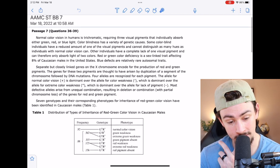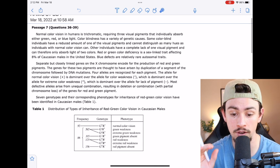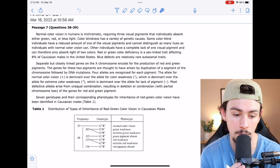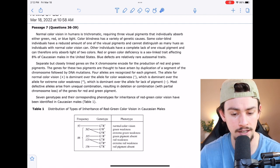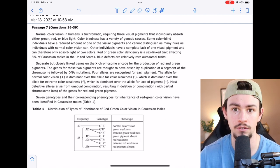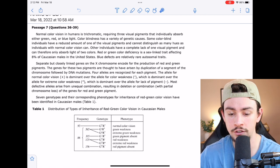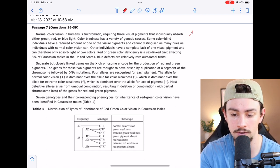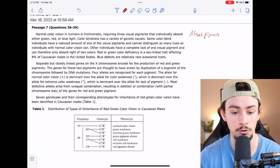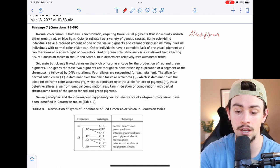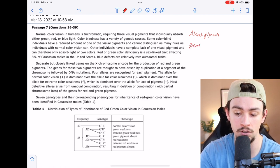It says normal color vision in humans is trichromatic, requiring three visual pigments that individually absorb either green, red, or blue light. Color blindness has a variety of genetic causes. Because they introduce what vision is, the absorption of pigments, and then immediately pivot to color blindness, saying it's due to genetic causes, I'm going to put down genetics.